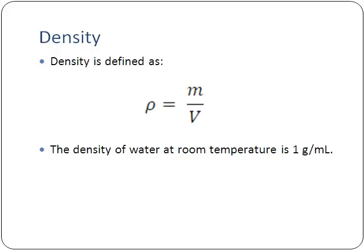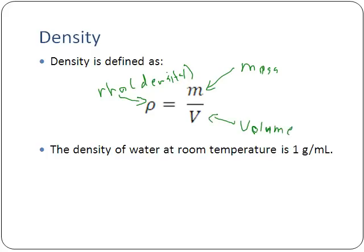Density is defined as rho equals M over V. This symbol that looks like a P is actually the Greek letter rho (RHO), which is the symbol for density. M is mass and V is volume. So density equals mass over volume. Sometimes you'll see a capital D used instead of rho, but rho is the one most commonly used in science to indicate density.